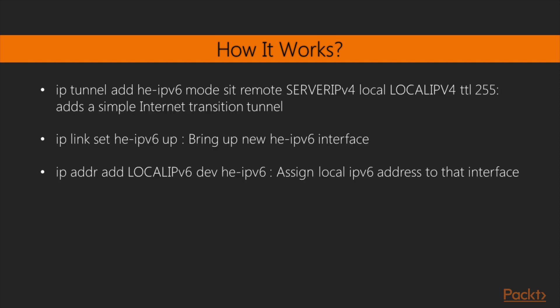The command 'ip tunnel add HE-IPv6 mode sit remote [server IPv4] local [local IPv4] ttl 255' adds a Simple Internet Transition (SIT) tunnel represented as an interface named HE-IPv6. SIT tunnels require that you provide both the local and remote IPv4 addresses. 'ip link set HE-IPv6 up' brings up the new HE-IPv6 interface. 'ip addr add [local IPv6] dev HE-IPv6' assigns your local IPv6 address to that interface.